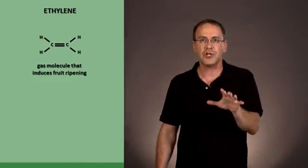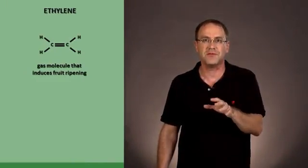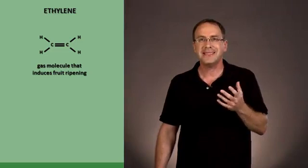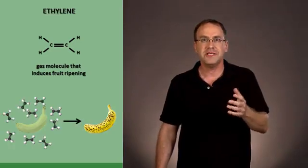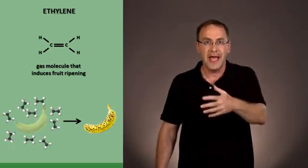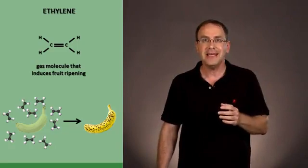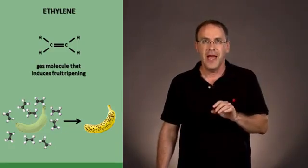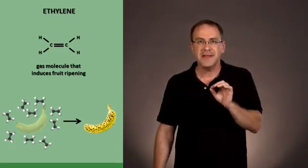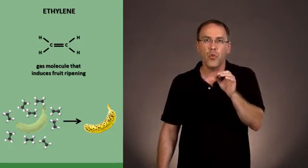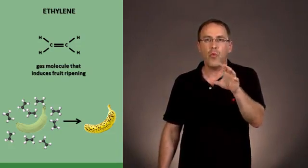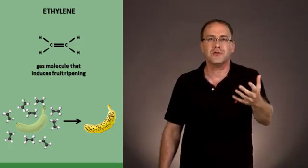So here's the structure of ethylene. You can see it's a very small molecule, two carbons, four hydrogens. And it's a gas, of course. It diffuses in the air spaces within a plant and around the plant, and it can induce fruit ripening. Actually, plants are so sensitive that they can respond to one molecule within 100 million molecules of air.